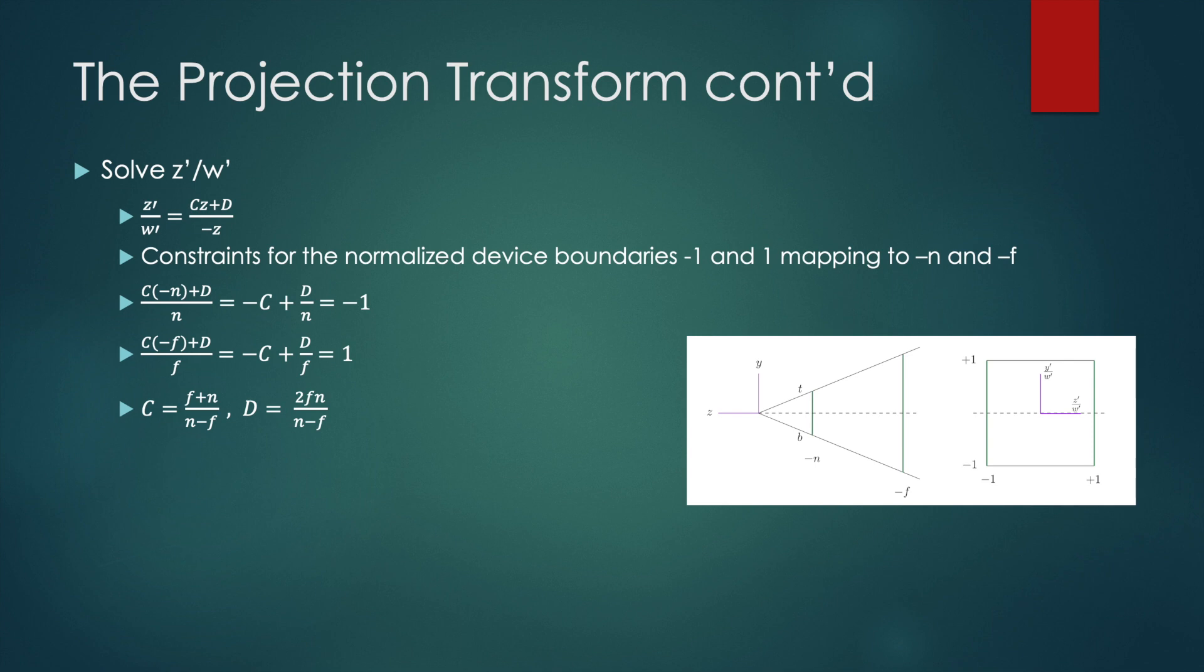And now putting it all together we have built the projection matrix which takes objects from the viewing coordinate system and maps them to the clipping volume.